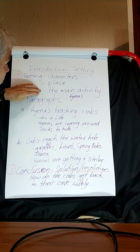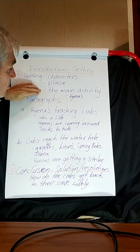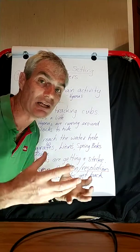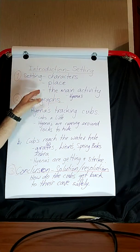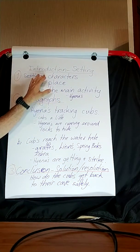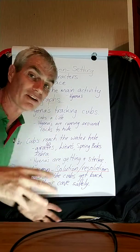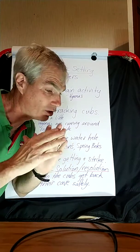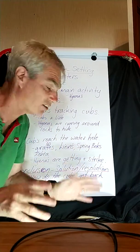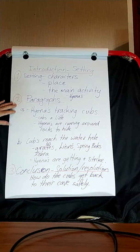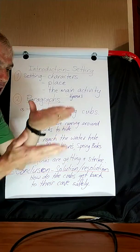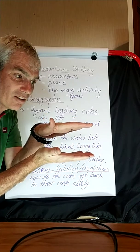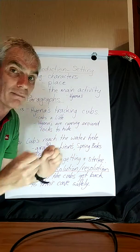You need to explain in the first section of the story the main activity — and this is where the hyenas are looking for the cubs, for the cheetahs that you've already described. Once you have explained the main parts of the story, you haven't told the story yet. Now you go into paragraphs. Paragraphs are a section of sentences that describe one main aspect.